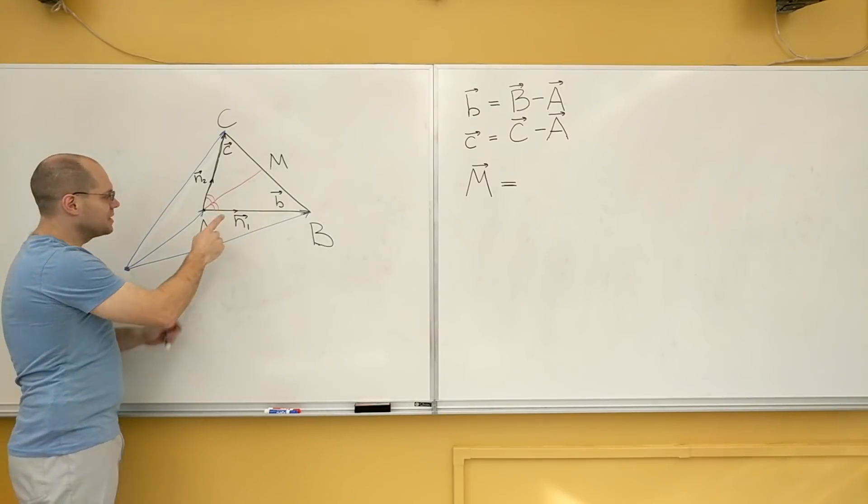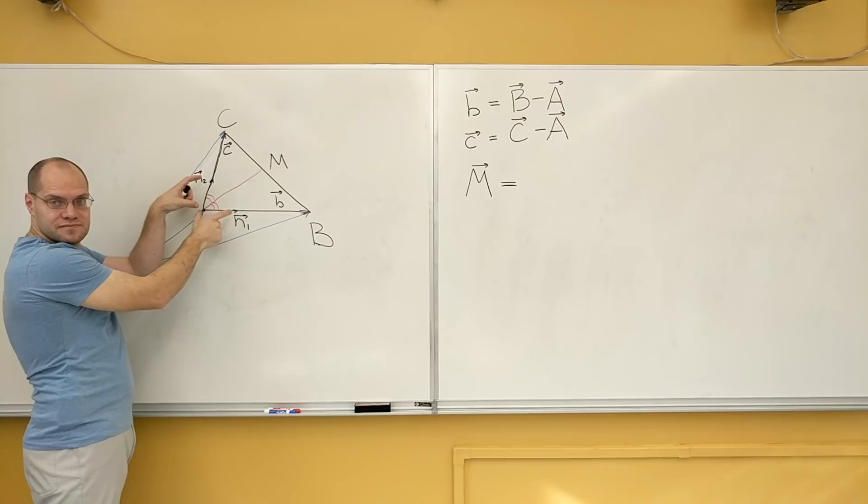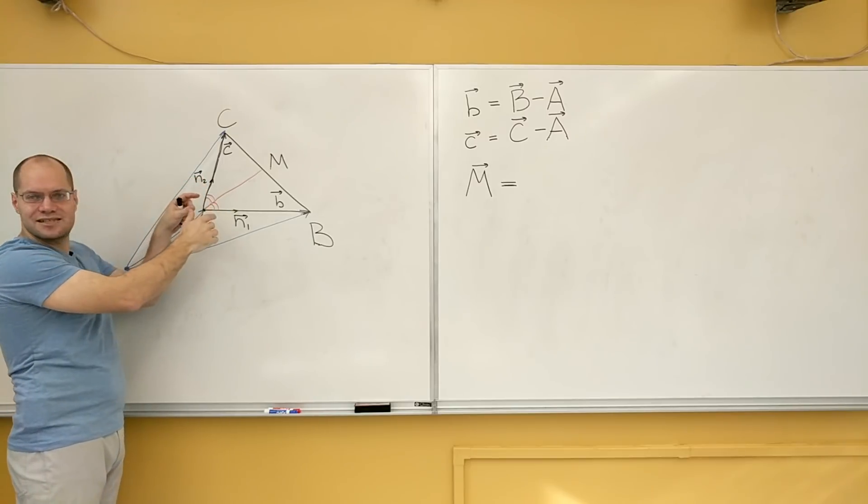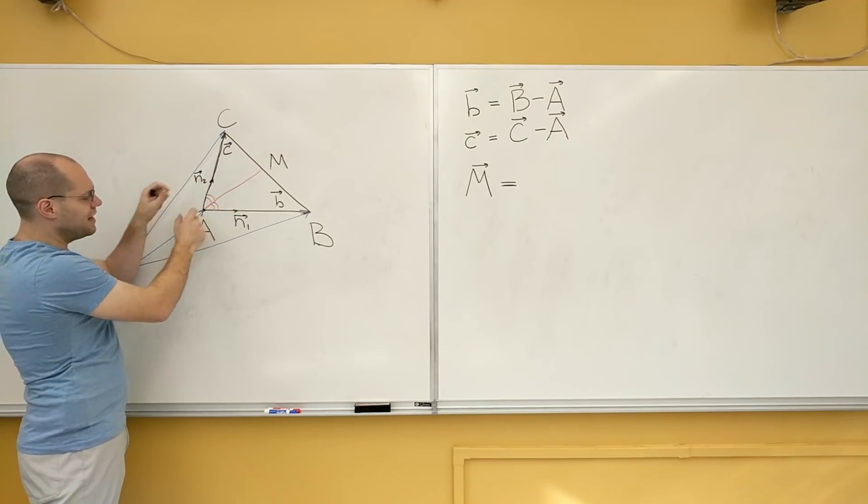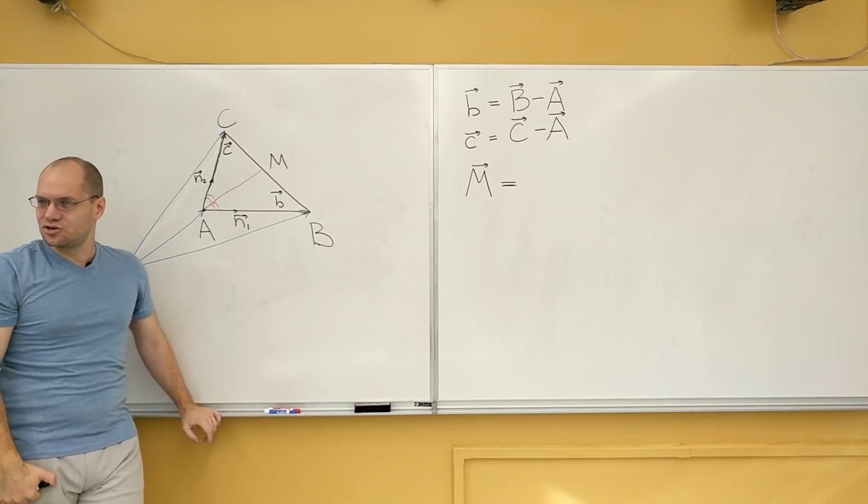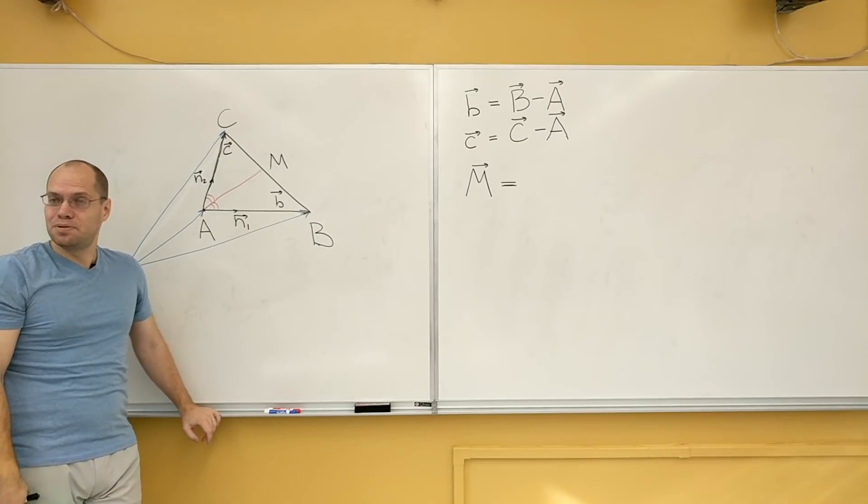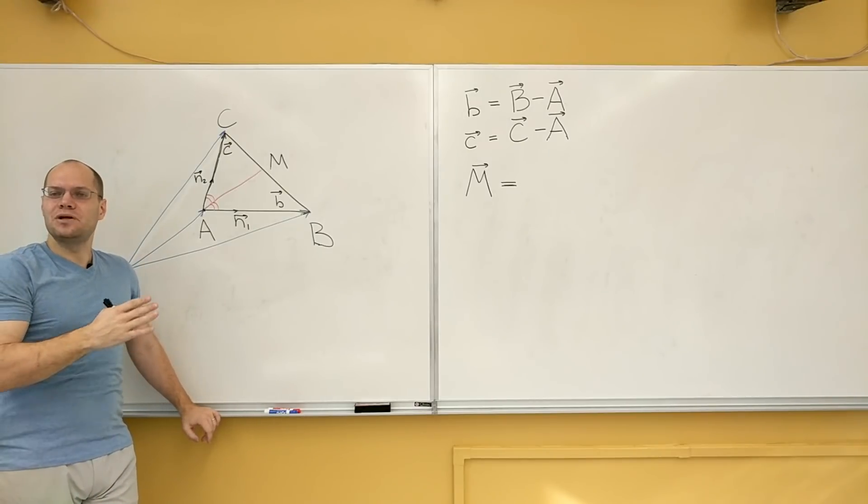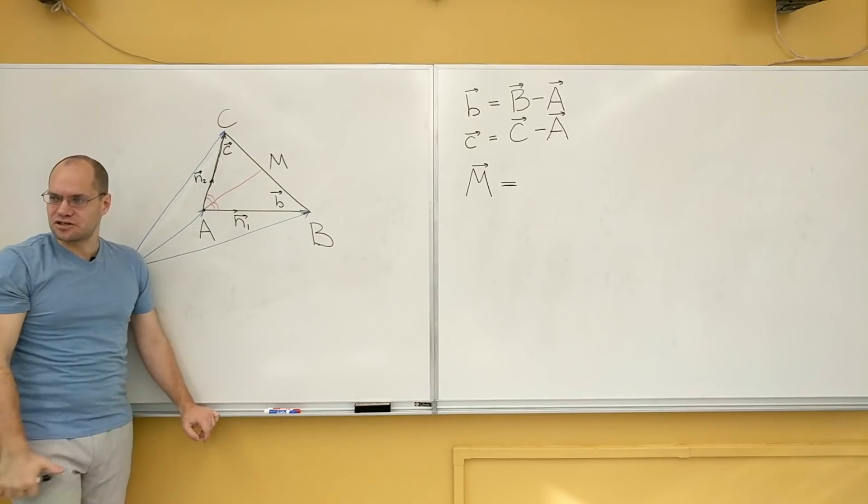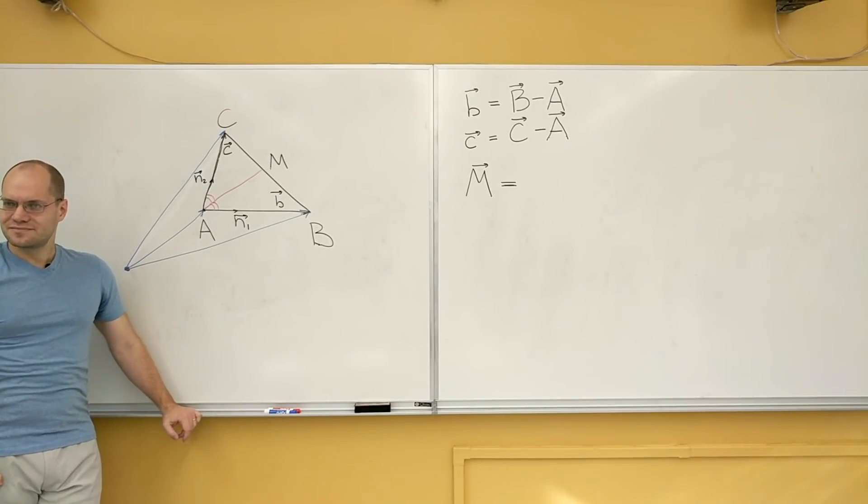Now, because they're equal lengths, and so we have basically an isosceles triangle, if I were to find the average of N1 and N2, or even their sum, N1 plus N2, that will point along the bisector. You guys are with me on that? N1 plus N2 points along the bisector.